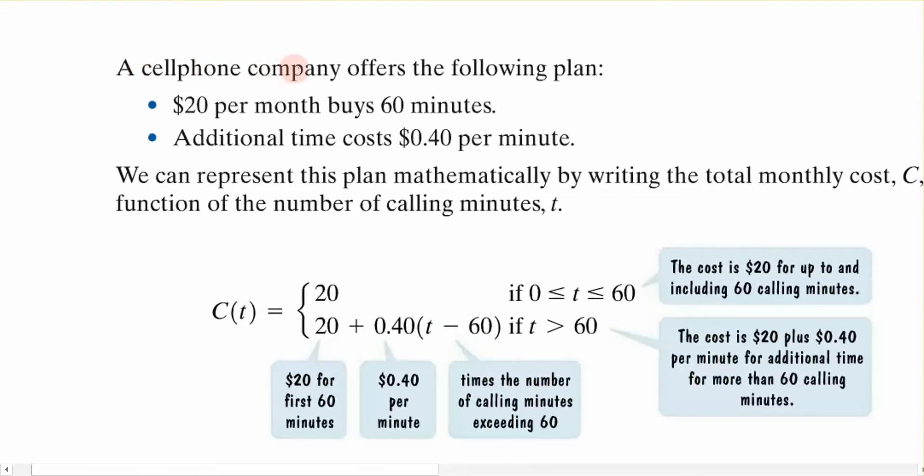Let's say we have a cell phone company that offers a plan. On the first 60 minutes, it's $20. It's a flat fee for the first 60 minutes. Anything after those 60 minutes, they're going to charge you $0.40 per minute.